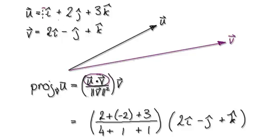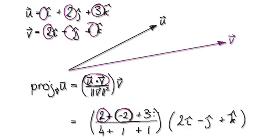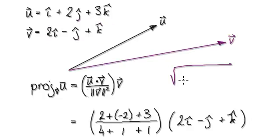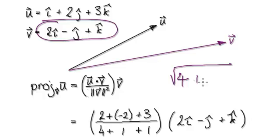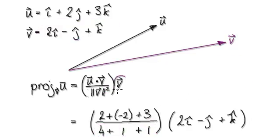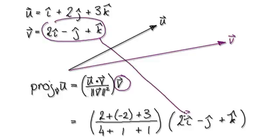So, dot product: that would be 1 times 2, then 2 times negative 1, and then 3 times 1. And then the magnitude — the magnitude of V. So the magnitude of V squared: it would be 2 squared plus 1 squared plus 1 squared, giving 4 plus 1 plus 1. Since we square the magnitude, that gets rid of the square root, leaving 4, 1, and 1. Then carry the vector V down. That would then give you this.